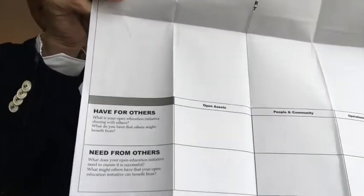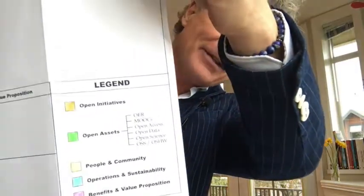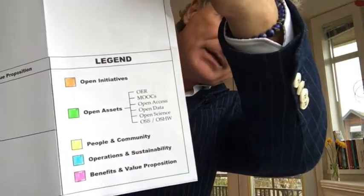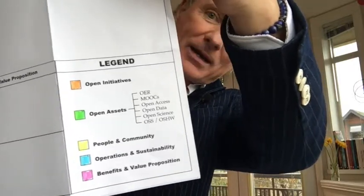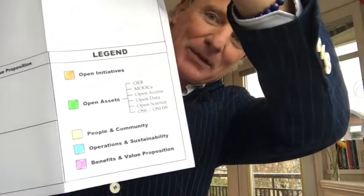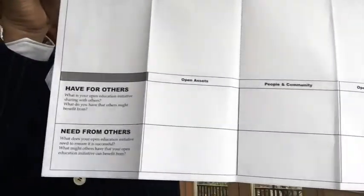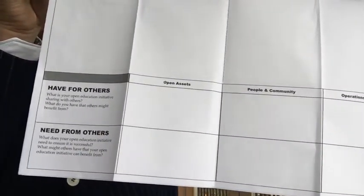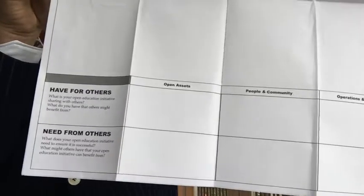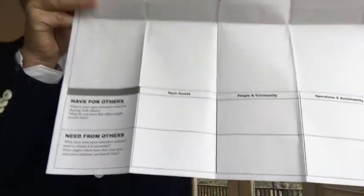As you document all of that, we'll be asking you to color code it as per this legend, where we have orange being open initiatives, green for open assets, yellow for people and community, blue for operations and sustainability, and pinkish red for benefits and value proposition. And at the same time, across the bottom, we'll be asking you as you do your map to identify what you have for others and what you need from others.